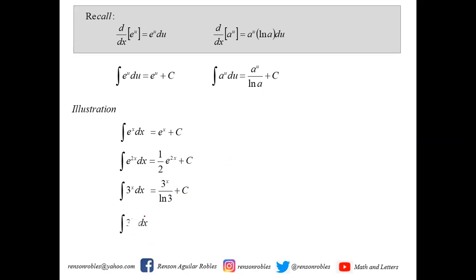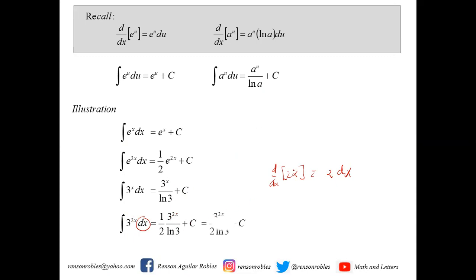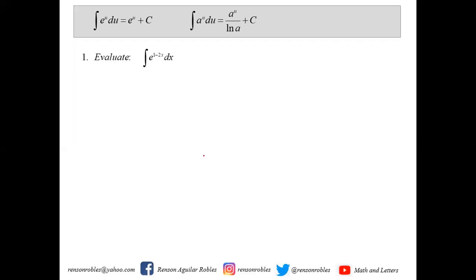Another modification: the integral of 3 raised to 2x dx. The derivative of 2x is equal to 2 dx, and we only have dx here. We just get the reciprocal of 2, giving 1 half, then copy 3 raised to 2x over ln 3 plus c. That can be written as 3 raised to 2x over 2 ln 3 plus c.